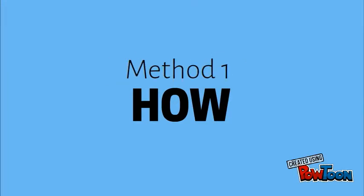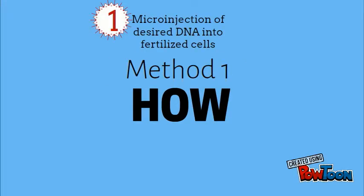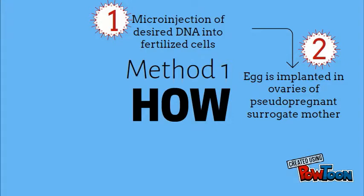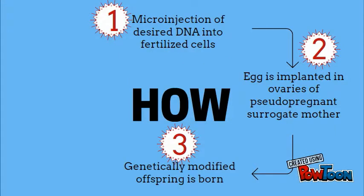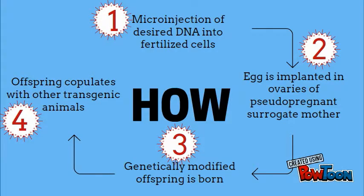Let's begin to discuss how transgenically modified animals are made. There are two ways in which this could be done. The first method starts with a microinjection of the desired DNA into the fertilized cell of the soon-to-be transgenic animal. The eggs get implanted into the ovaries of a pseudopregnant surrogate mother who is of the same species as the transgenic animal.